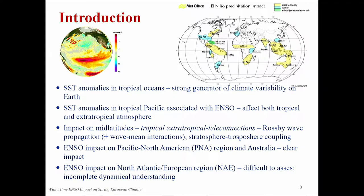We know that tropical oceans are a strong generator of climate variability all over the world. I am particularly interested in SST anomalies in the tropical Pacific and in ENSO phases, both La Niña and El Niño, and their impact on European climate variability. On this picture we may see El Niño precipitation impact over the globe. The impact over some regions is quite clear, particularly over the Pacific North American pattern and over Australia, but if you look at the European region there is quite a weak signal.